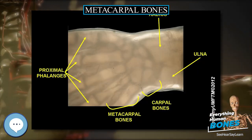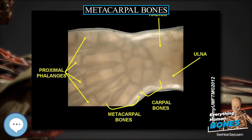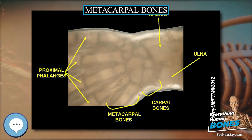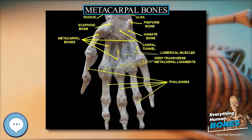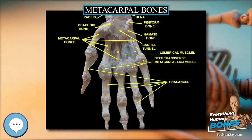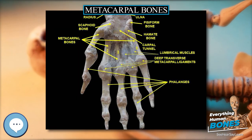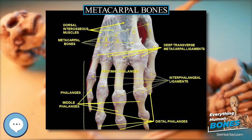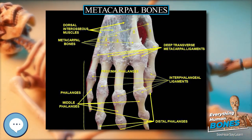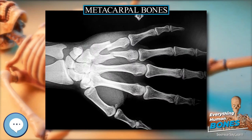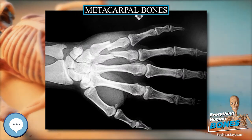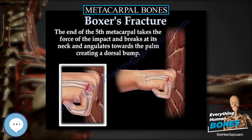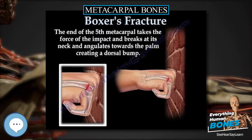In digitigrade and unguligrade animals, the metacarpals are greatly extended and strengthened, forming an additional segment to the limb — a feature that typically enhances the animal's speed. In both birds and bats, the metacarpals form part of the wing.